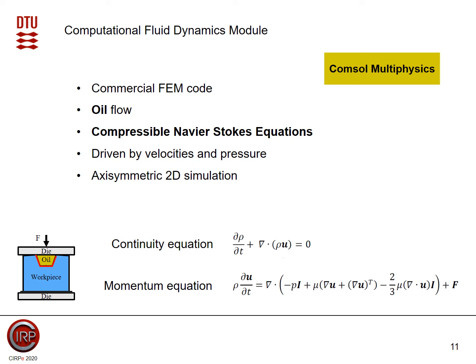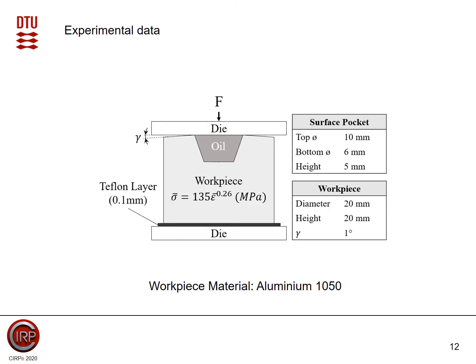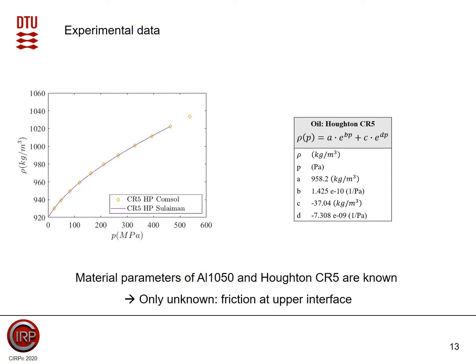The billets were made of aluminum 1050, for which we have a flow stress curve that I can plug directly into my simulations. In order to get experimental data of our oil, the oil was taken, poured into a pressure chamber, and then compressed. From this, one can derive a pressure-dependent density as a function, which can then be plugged into our fluid solver. This leaves us with everything defined: we have a flow stress curve of the metal, and we have a pressure-dependent density of the fluid.